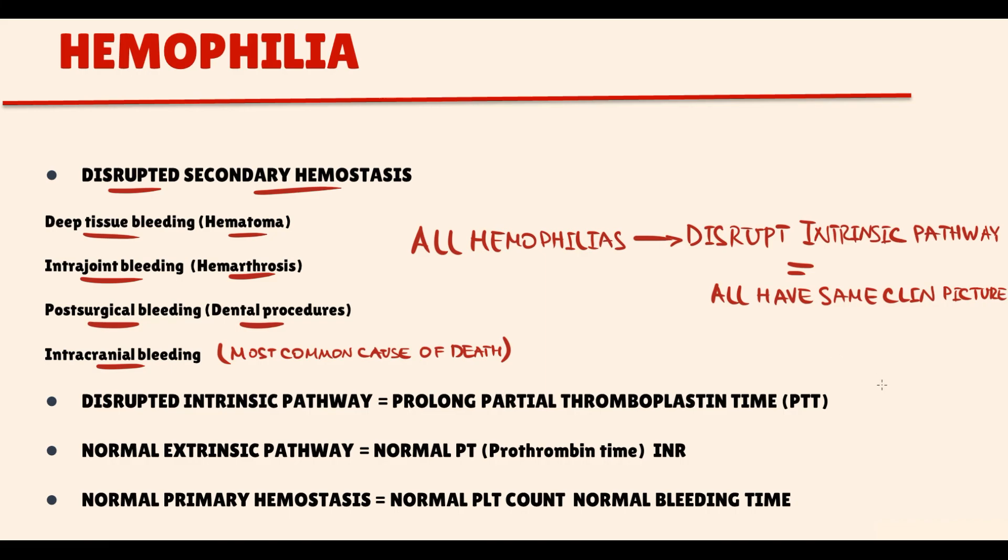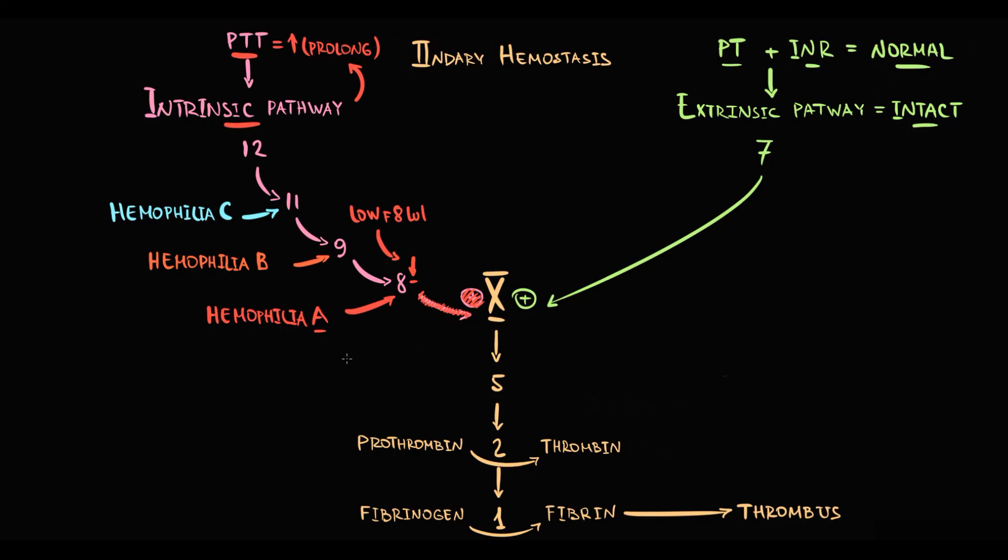The treatment of hemophilia A includes the infusion of factor VIII concentrate. Obviously, infusion of recombinant factor VIII will correct the intrinsic pathway. The second option is emicizumab. Basically, this drug activates factor X. So, instead of factor VIII that is missing, we can infuse emicizumab that will directly activate factor X.